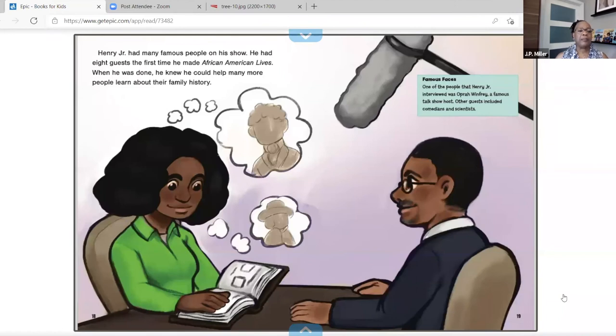Henry, Jr. had many famous people on his show. He had eight guests the first time he made African American Lives. When he was done, he knew he could help many more people learn about their family history. Famous faces. One of the people that Henry, Jr. interviewed was Oprah Winfrey, a famous talk show host. Other guests included comedians and scientists.